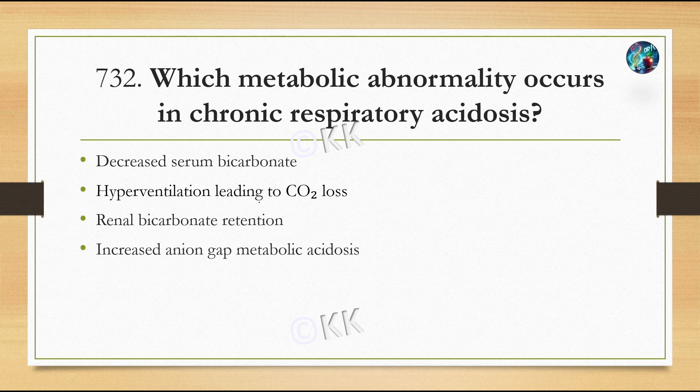Which metabolic abnormality occurs in chronic respiratory acidosis? Option A, decreased serum bicarbonate. Option B, hyperventilation leading to CO2 loss. Option C, renal bicarbonate retention. Option D, increased anion gap metabolic acidosis. The stated correct option is Option B, hyperventilation leading to CO2 loss.